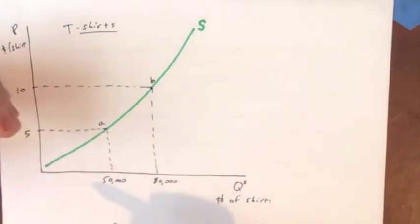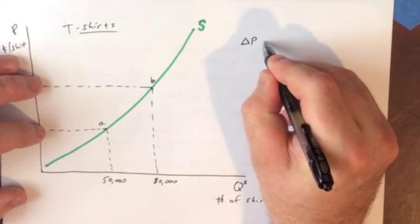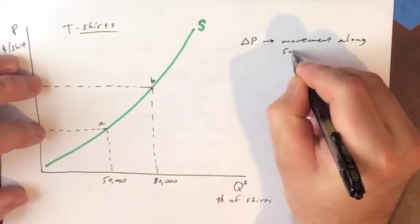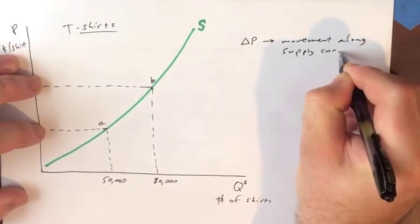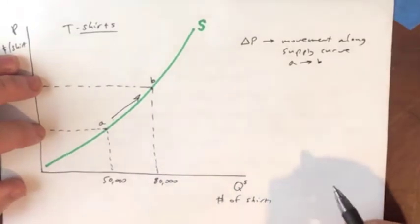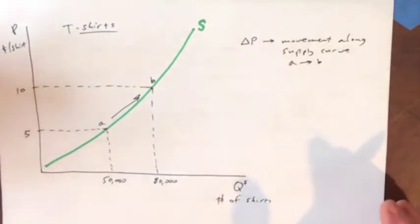So we've got identified two different points along this supply curve. And of course there's many more because a curve has an infinite number of different points along it. What we're saying here is this comes out of a mathematical function. That's the supply function. And it gives us, for any given price, what is the quantity supplied. So a change in the price causes a movement along the supply curve, for example from A to B.